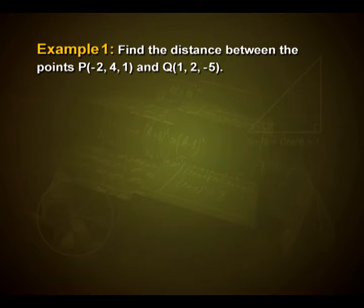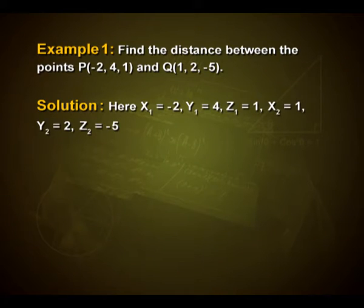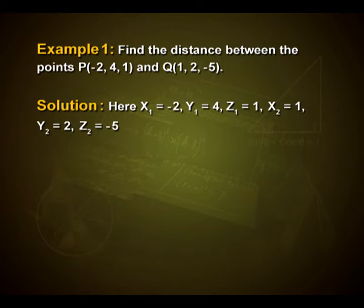Now let us look into an example. Find the distance between the points P(−2, 4, 1) and Q(1, 2, −5). Here we can see that x1 = −2, y1 = 4, z1 = 1, x2 = 1, y2 = 2, and z2 = −5.